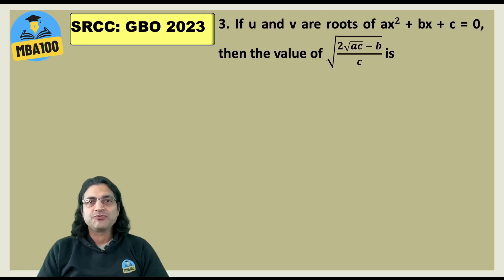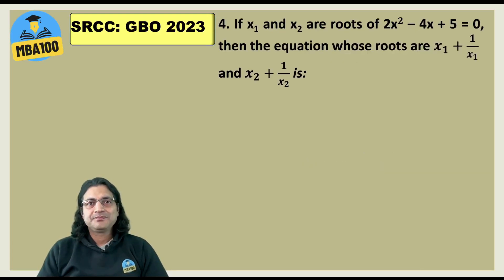What about this one? Easy 1 by root u plus 1 by root v. What about this one? Slightly time taking and the answer is 10x squared minus 28x plus 25 equal to 0.